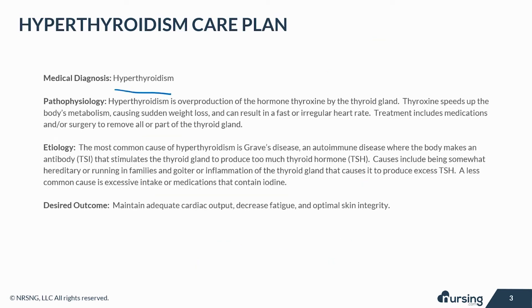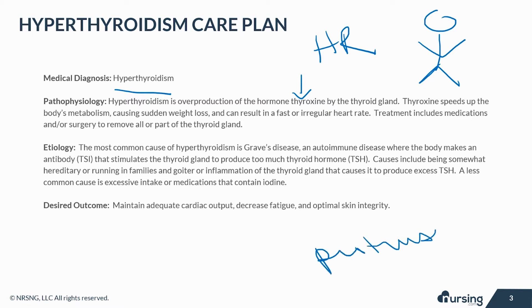Hyperthyroidism is the overproduction of the hormone thyroxine by the thyroid gland. Thyroxine speeds up the body's metabolism, causing sudden weight loss and can result in a fast or irregular heart rate. Inflammation and edema can result in exophthalmos, or that bulging or protrusion of the eyes. Treatment includes medications and/or surgery to remove all or part of the thyroid gland. The symptoms of hyperthyroidism are similar to other health problems and may go undetected for some time.